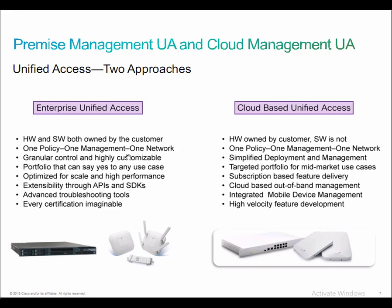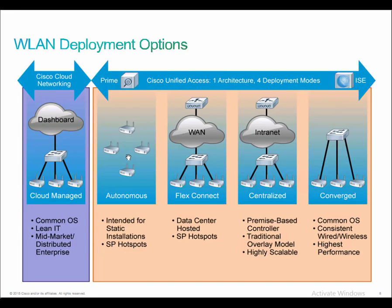When it comes to wireless LAN deployments, Cisco defines five major types: cloud managed, autonomous, FlexConnect, centralized, and converged.